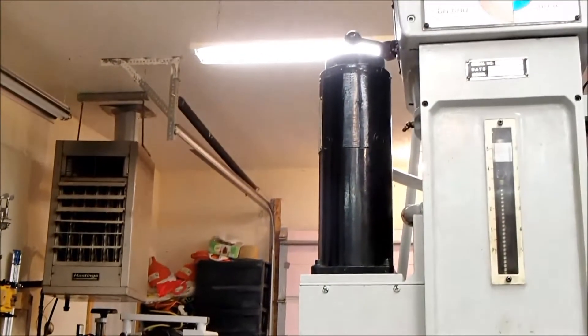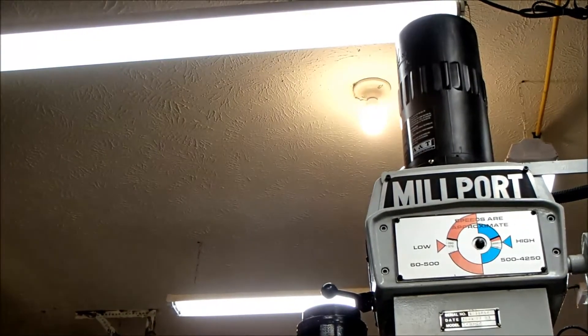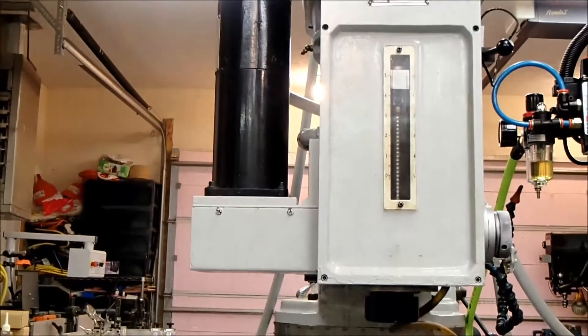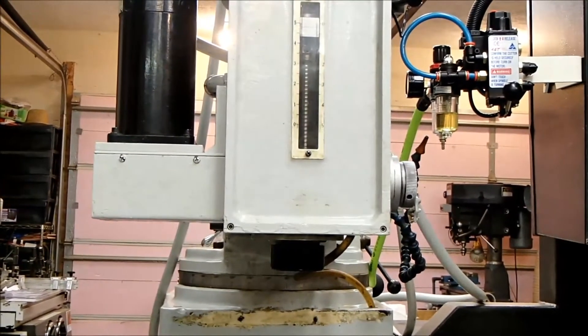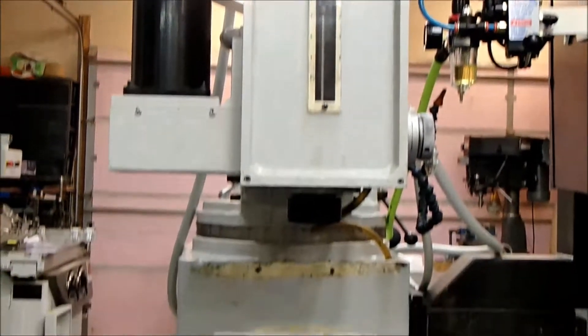And then tonight I installed an auto draw bar. It's an Aussie ADB123 universal draw bar. You can see the controls here to the right of the head of the mill, and here's some of the tooling on the table.